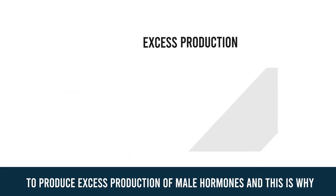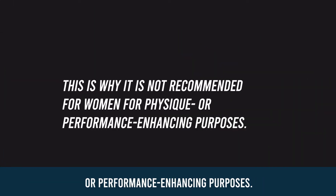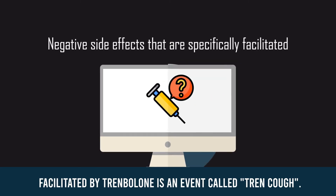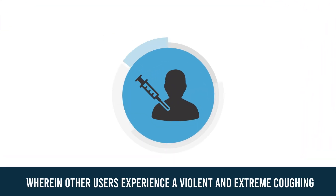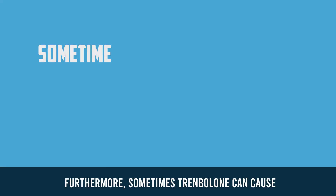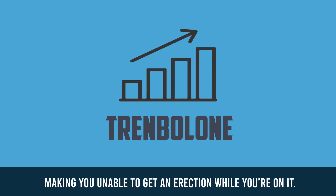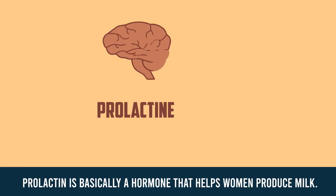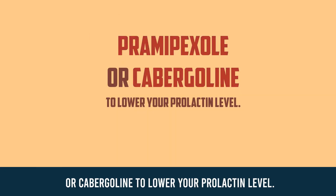Trenbolone, like any other anabolic steroid, has side effects. The strong androgenic nature of trenbolone facilitates excess production of male hormones, and this is why it is not recommended for women for physique or performance enhancing purposes. Generally its side effects are similar to other anabolic steroids; however, a negative side effect specifically associated with trenbolone is an event called tren cough. This happens shortly after or during an injection, wherein users experience violent and extreme coughing lasting for several minutes. Furthermore, trenbolone can cause insomnia and heavy night sweats. Trenbolone will also increase your prolactin level, making you unable to get an erection while on it — this is what they call tren dick. Prolactin is basically a hormone that helps women produce milk. To fix this, all you need to take is pramipexole or cabergoline to lower your prolactin level.